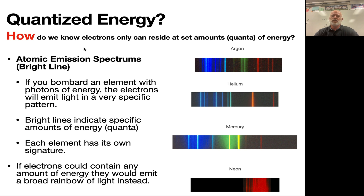We call that glowing light an atomic emission spectrum, otherwise known as a bright line spectrum. We can see these different bright line spectrums, and every single element has their own signature. But you don't get all kinds of light — you don't get a full rainbow of light. All you get is these really distinct bright lines, sometimes hundreds of them packed together, sometimes spread out all across the visible spectrum.